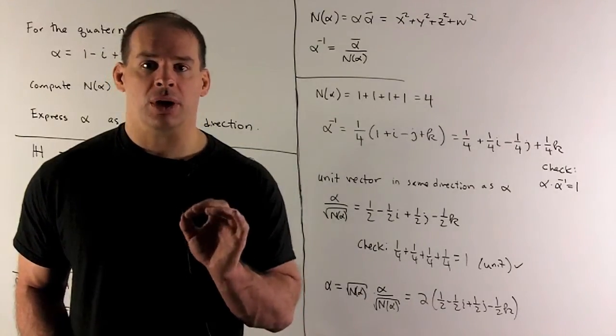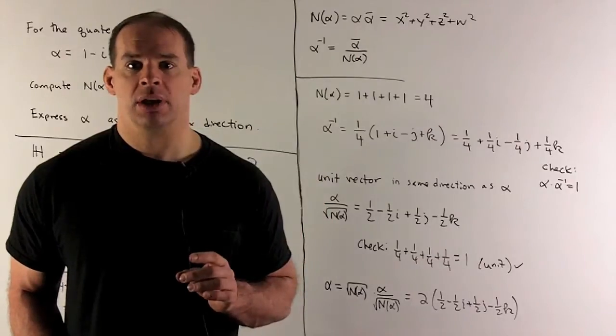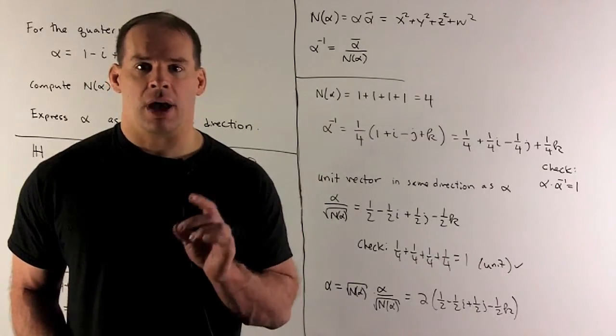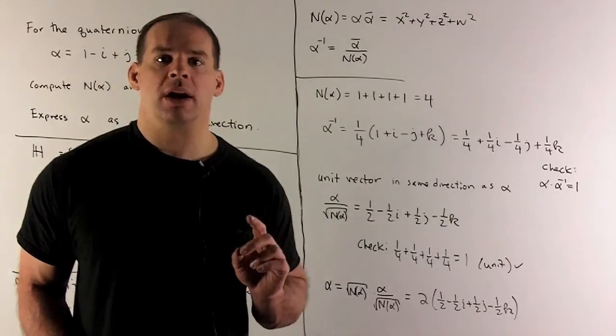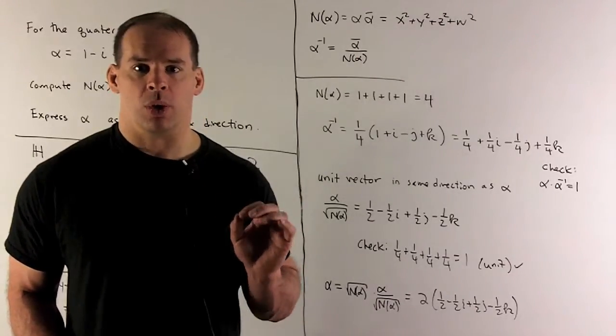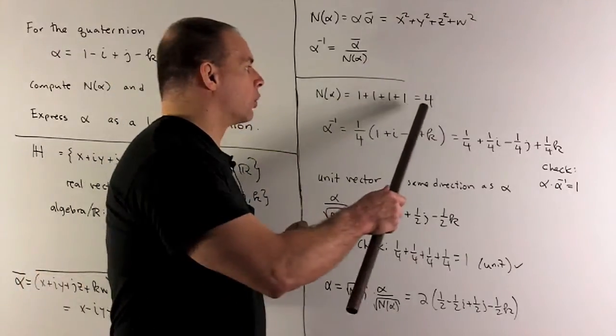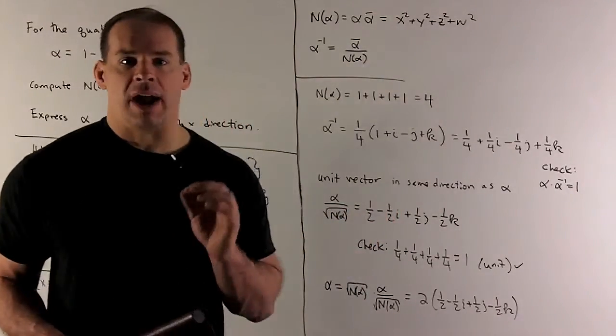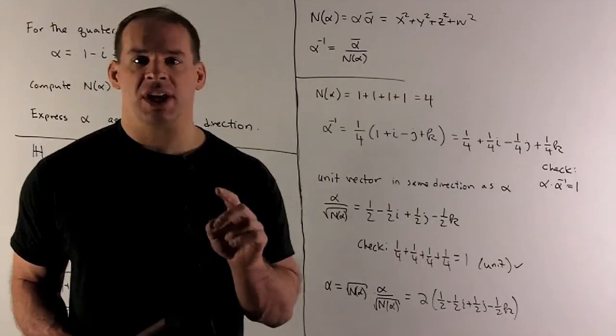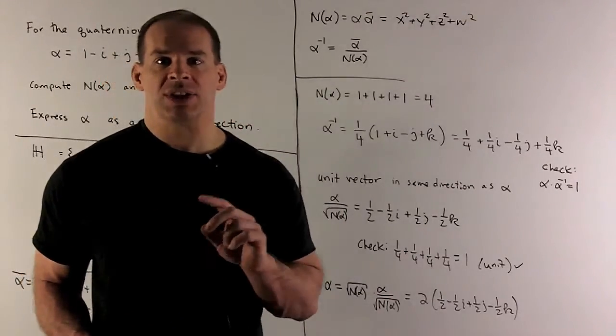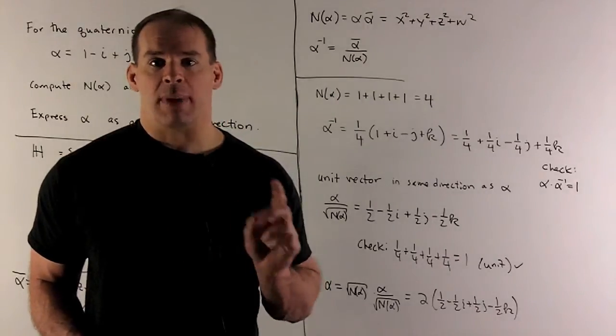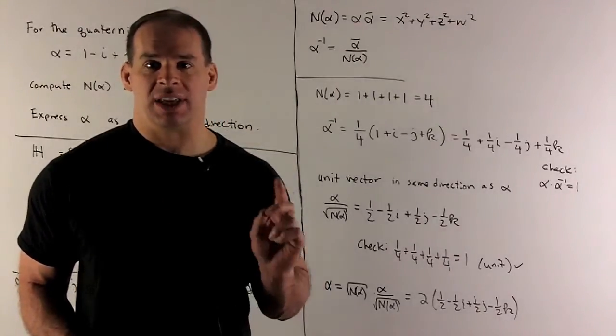Now I can put numbers to these equations. So for our alpha, the norm is just going to be the sum of x squared plus y squared plus z squared plus w squared. So we're going to get 1 plus 1 plus 1 plus 1 gives me a 4 for our norm. For alpha inverse, we're going to take the conjugate, divide by the norm. So we'll have 1 fourth minus i goes to i, j goes to minus j, minus k goes to k.